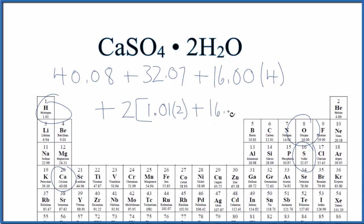And when we put this all together, we add everything up here, plus two times what's in the brackets. Our molar mass for calcium sulfate dihydrate, that's going to be 172.17, and the units are grams per mole. So if we have one mole of calcium sulfate dihydrate, it'll weigh 172.17 grams.